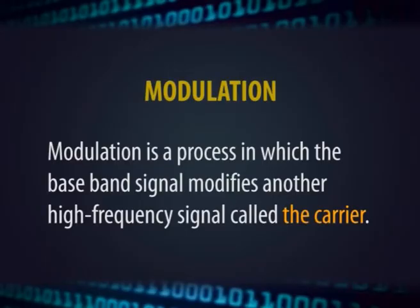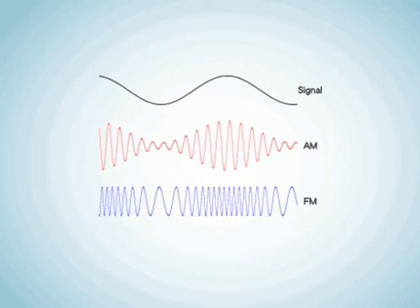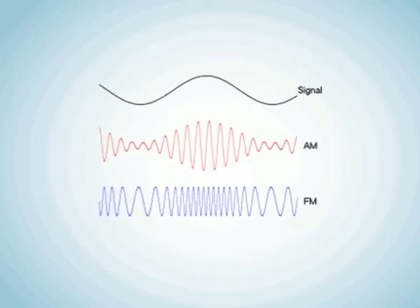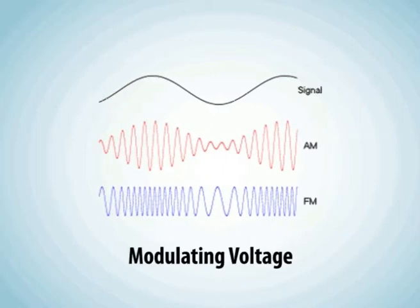Modulation is a process in which the baseband signal modifies another high-frequency signal called the carrier, in which some characteristic — usually amplitude, frequency, or phase — of the carrier is varied in accordance with the instantaneous value of the modulating voltage. In other words, modulation is used because some data signals are not always suitable for direct transmission, but the modulated signals may be more suitable.